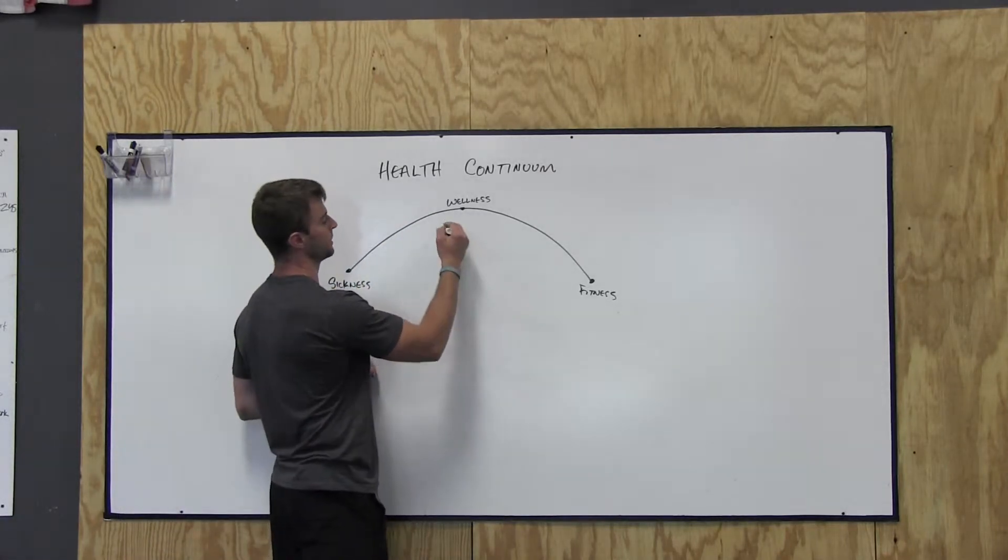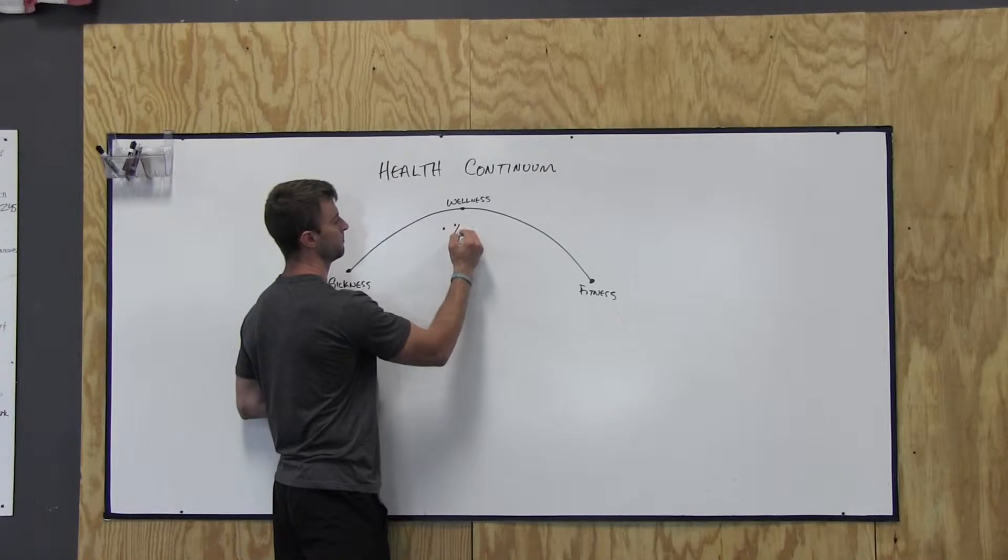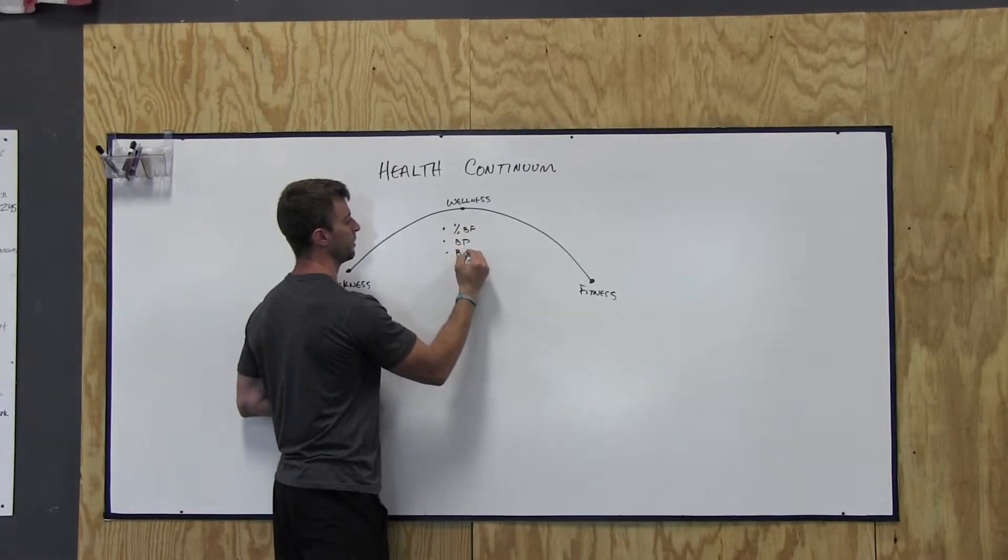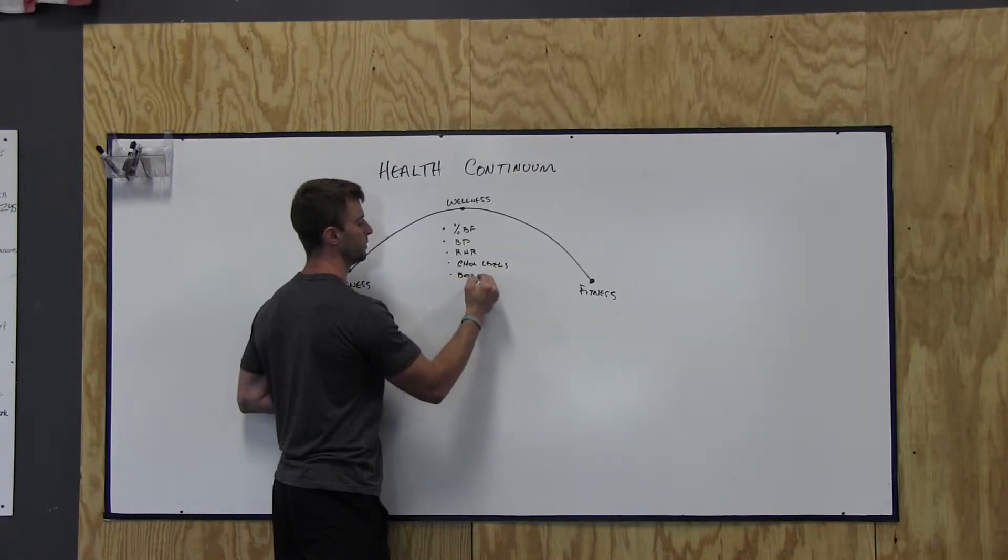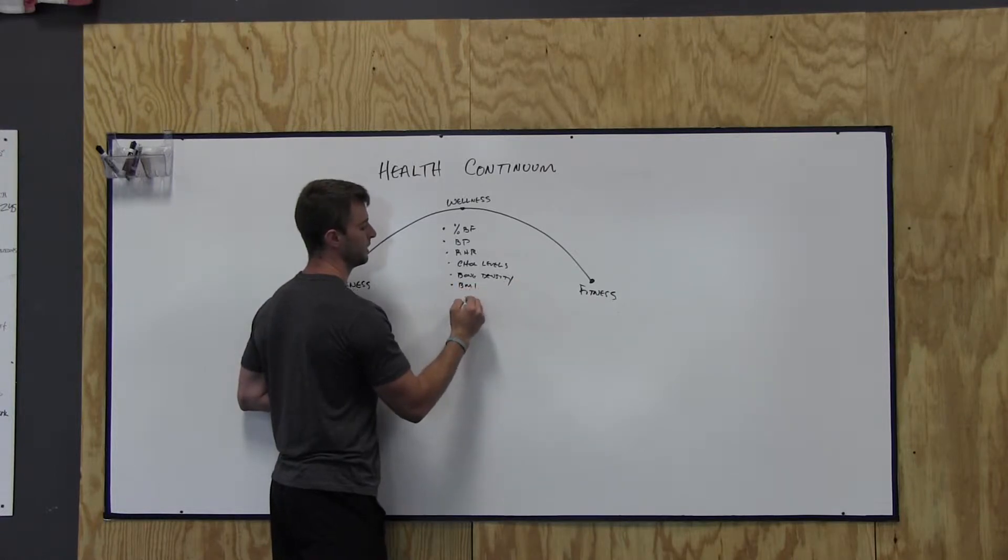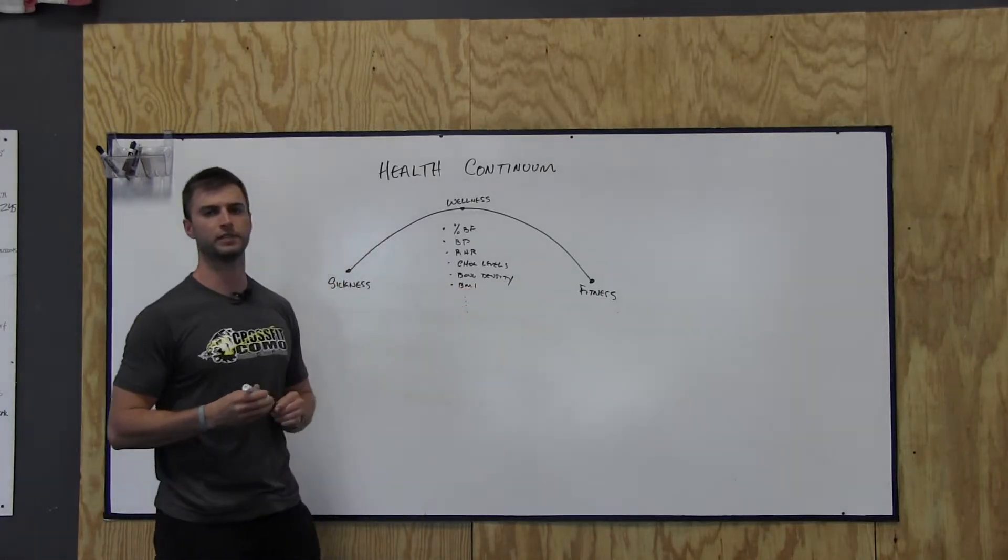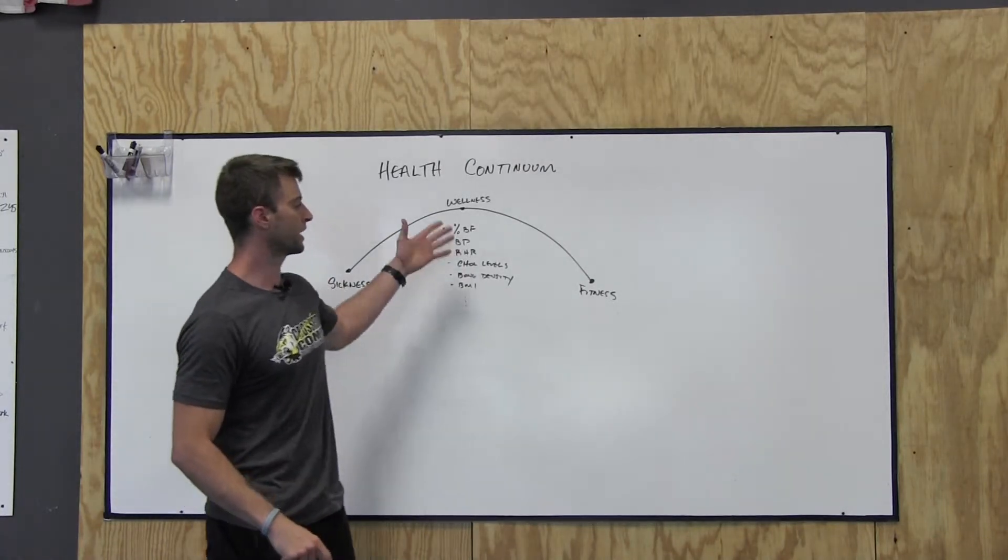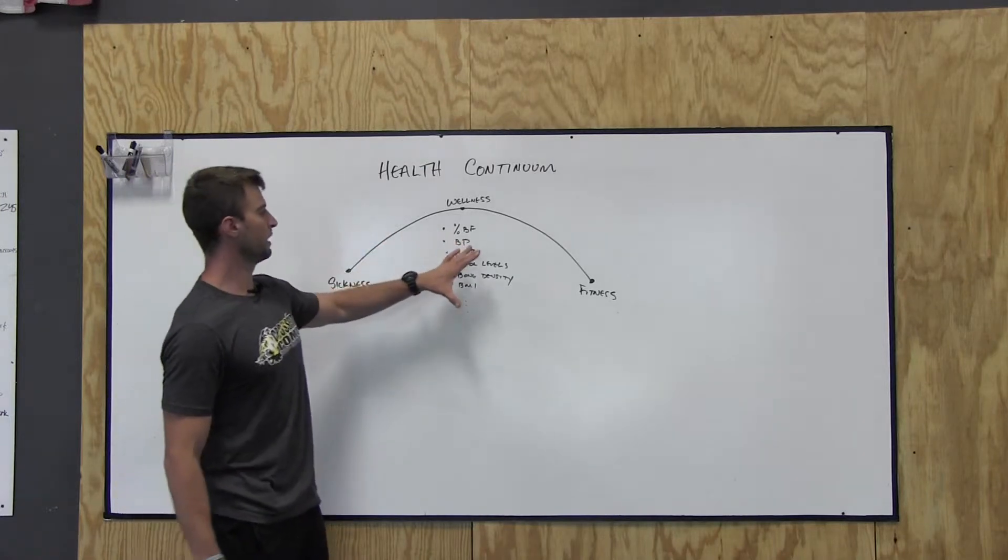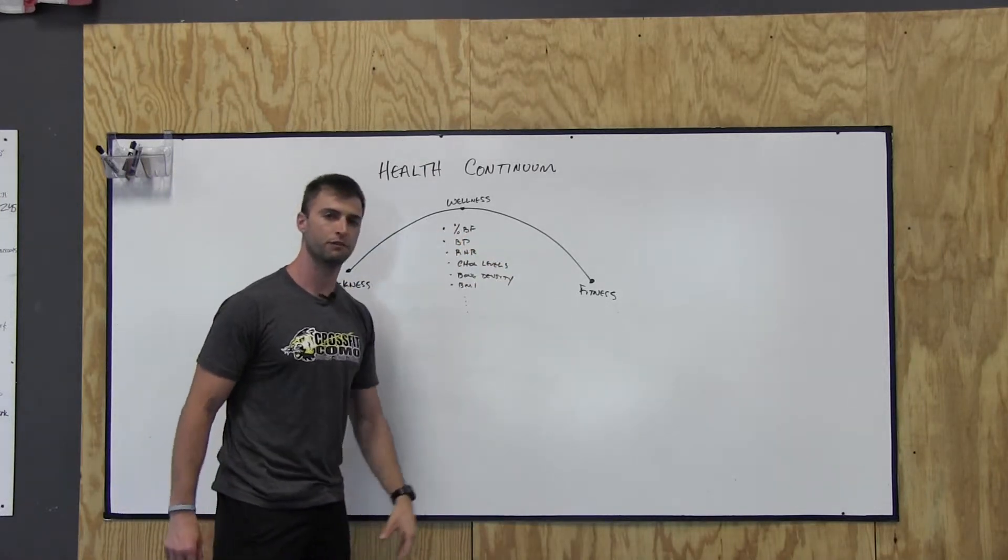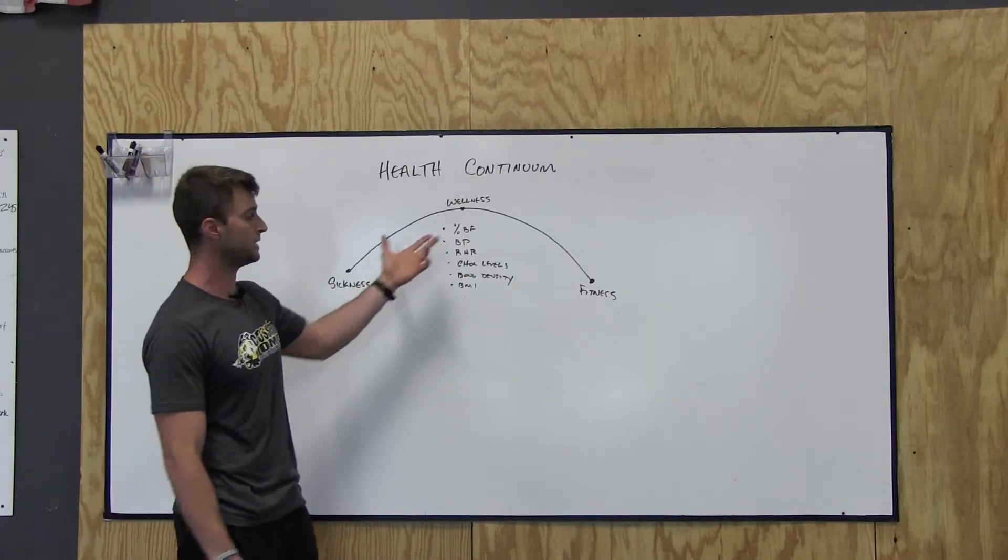Some different ways to measure this, to know whether you're sick, well, or fit. You can take indicators such as percent body fat maybe. Maybe your blood pressure. Maybe your resting heart rate. Cholesterol levels. Bone density could be a good one. Maybe even BMI. Et cetera. There's tons of different indicators. Think about your normal checkup at a doctor's office, all the kind of things that they look at when you go in. So certain levels of these will take you over to sickness. Certain levels of these will take you over to fitness.